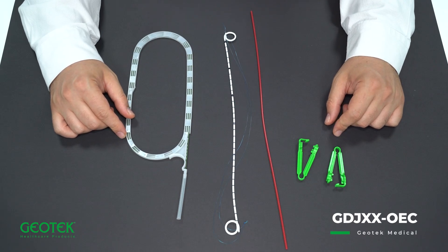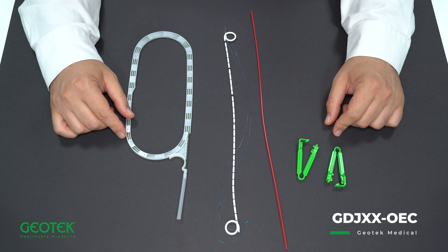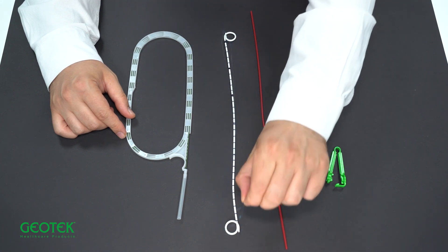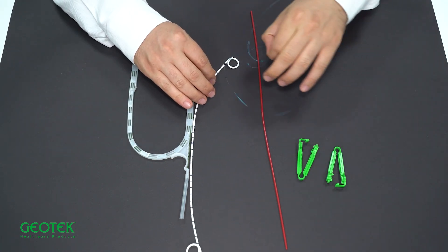One-way closed double J stents are used relatively more frequently. They are mostly used to prevent edema and obstruction in the ureter after a successful stone surgery. They can also be used to prevent ureteral compression due to tumor or other reasons.